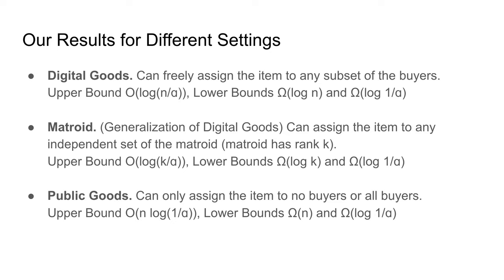Finally, we also study the public good setting. In this setting, you can either assign the item to no buyers at all or all buyers together. Because your hands are tied in this additional way, the problem is harder, and we show that the correct approximation guarantee changes so that the log n factor turns into just a linear factor of n.